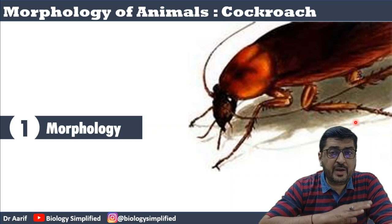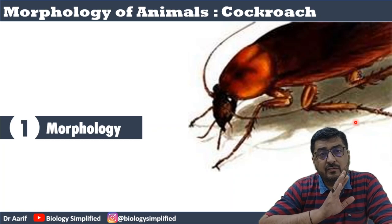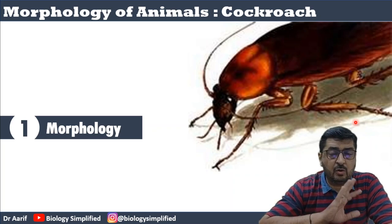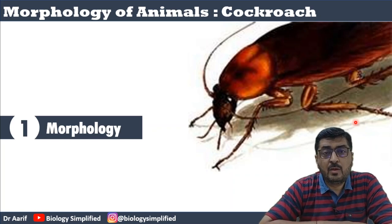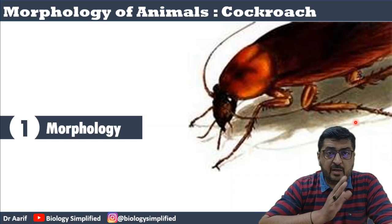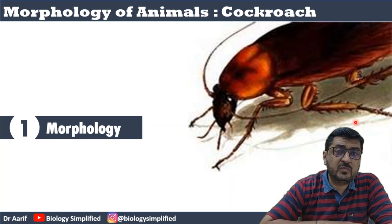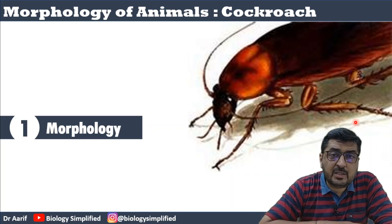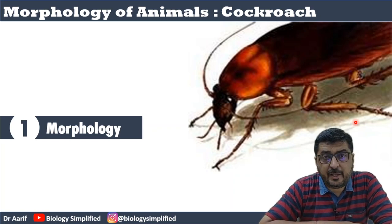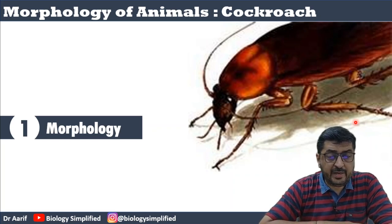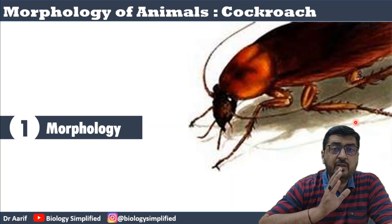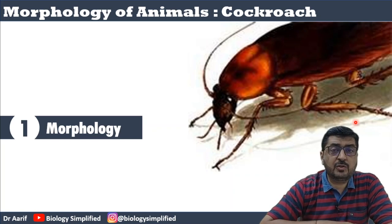The systems include circulatory, respiratory, reproductive, nervous, and all that. So right now we will go ahead with the morphology.